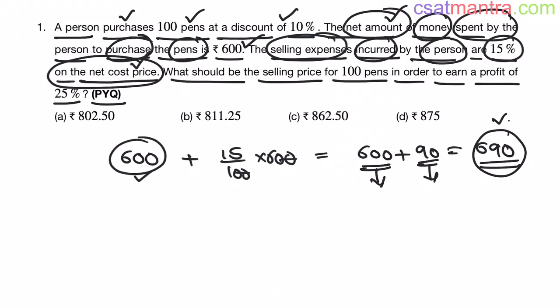This much investment he made in selling the pens. Or in other words, this much cost incurred to him in selling the pens. Now, what should be the selling price for 100 pens in order to earn a profit of 25%? This is the cost incurred to him in selling 100 pens. We are talking about 100 pens only.